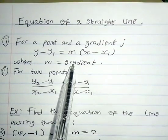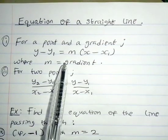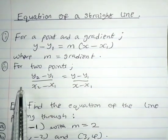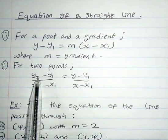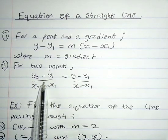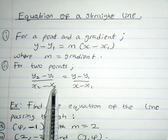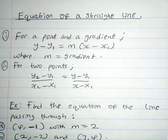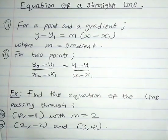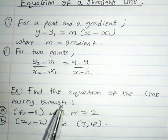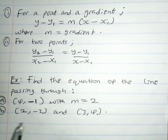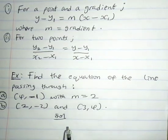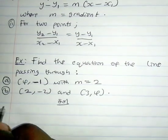For two points, the formula is given by (y2 minus y1) over (x2 minus x1) equals (y minus y1) over (x minus x1). So let's quickly dive into the examples.